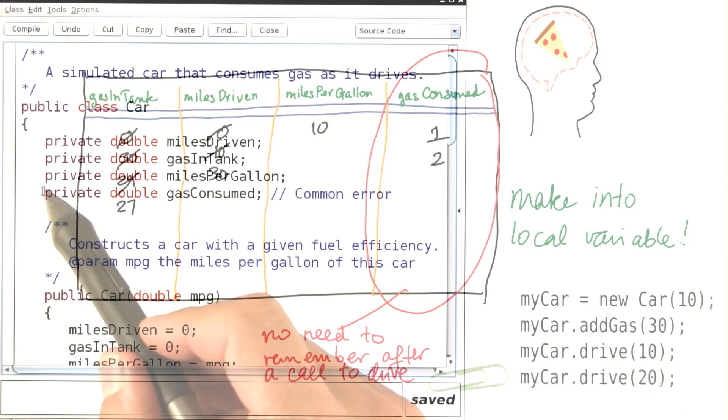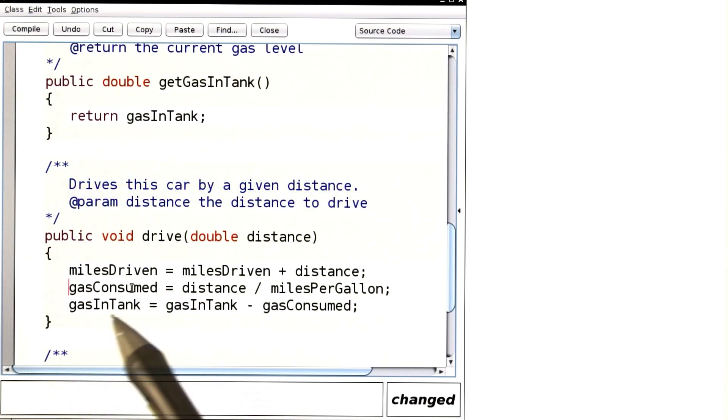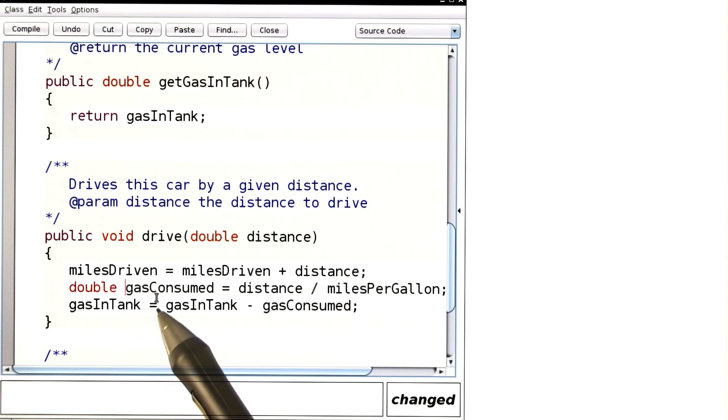Okay, let's make it so. Over here, let's not make gas consumed into an instance variable. Over here, we turn it into a local variable simply by adding the type. Remember, the difference between an assignment and a variable declaration is nothing but the type. Now, the code will compile.